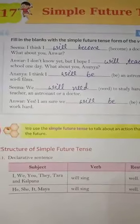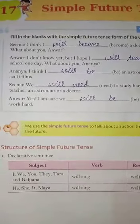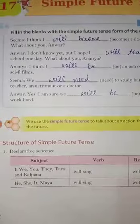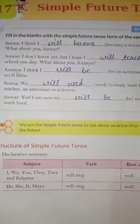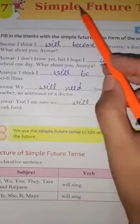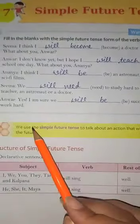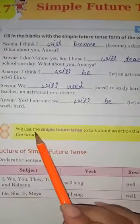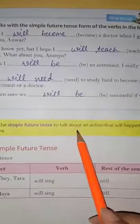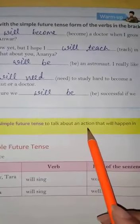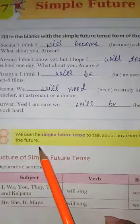Good morning class 4 students. Now open your English grammar books. Let us start lesson number 17 on page number 78 and the name of the chapter is Simple Future Tense. We use the simple future tense to talk about an action that will happen in the future.